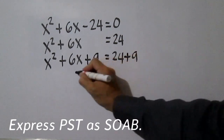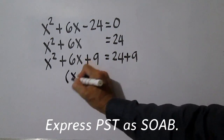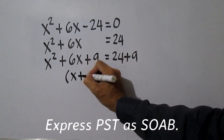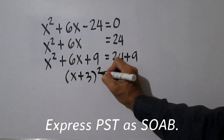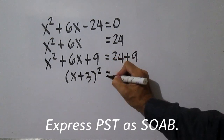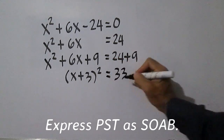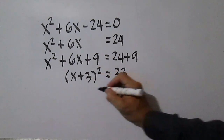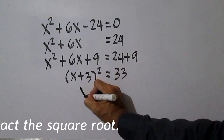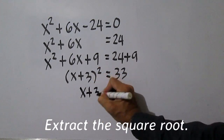Next, express x squared plus 6x plus 9, which is a perfect square polynomial, as the square of a binomial. Then solve by extracting the square root.